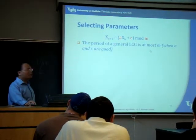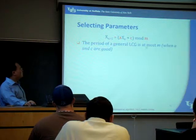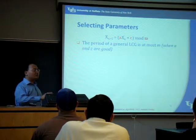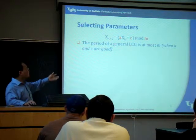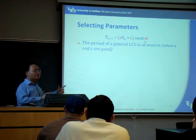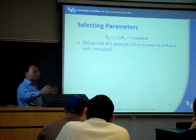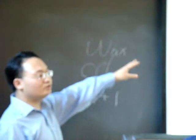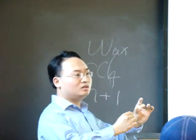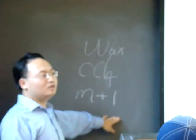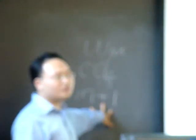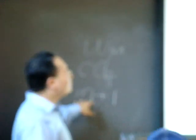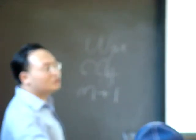Let's look at this simple formulation. The period of this LCG is at most m. Do you see the reason why the period will never exceed m? Because in a sequence of size m, there should be one number repeated, since these numbers only range from 0 to m minus 1 — it has m distinct values. So if you have m plus 1 values in a sequence, there will be at least one number repeated. For the same input, the same input will generate the same output. That's why the period is at most m.